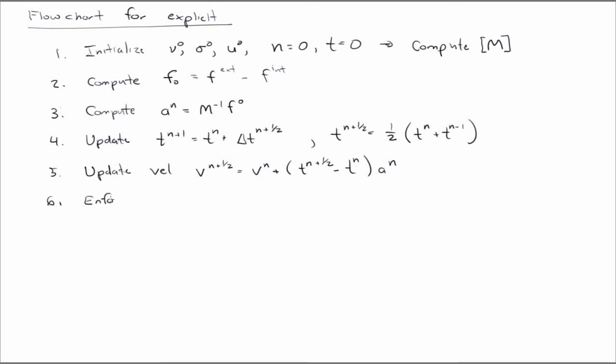We're going to enforce, now that we've updated the velocity based on the acceleration, we need to enforce any boundary conditions on the velocity. So we may have computed an acceleration and we have a new velocity now, but we may be applying some external velocity boundary condition. And if that's the case, we need to kind of override the ones we computed with the ones we're applying, because they're constraints.